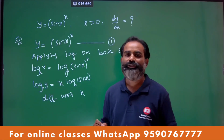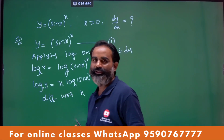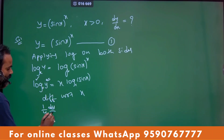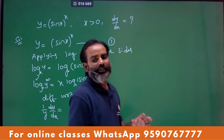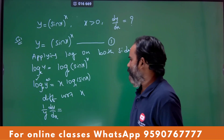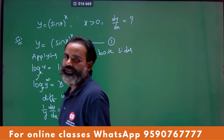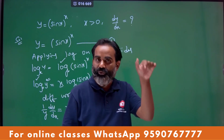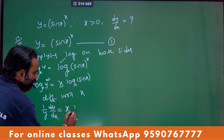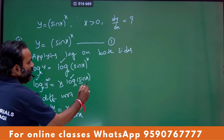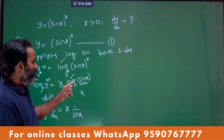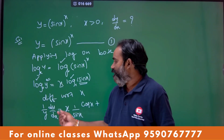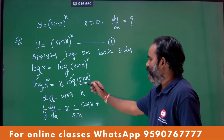What is the differentiation of log x? It is 1 by x. What is the differentiation of log y? It is 1 by y times dy by dx. So on the left side we get 1 by y times dy by dx. On the right, we need to apply the product rule — first function as it is, differentiation of the second.